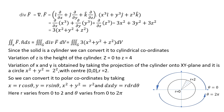First, find divergence of F: del dot F = (i ∂/∂x + j ∂/∂y + k ∂/∂z) dot (x³i + y³j + z³k). Taking the dot product: ∂/∂x of x³ = 3x²; ∂/∂y of y³ = 3y²; ∂/∂z of z³ = 3z². Since 3 is a common factor, divergence of F = 3(x² + y² + z²).